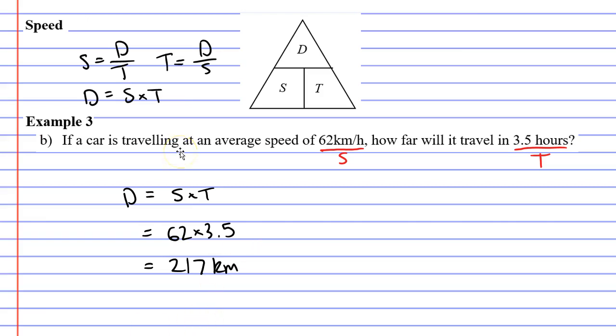Now I'll show you how to do this using the four boxes technique. Once again, we draw four boxes. We have a speed of 62 kilometers per hour. So we're going to write one hour on the right.